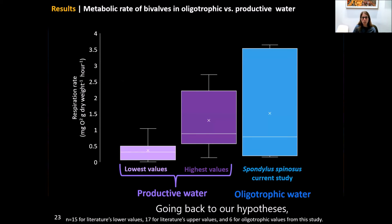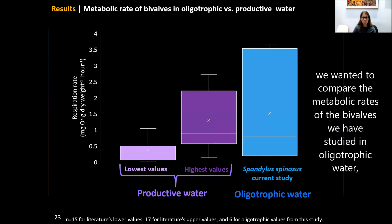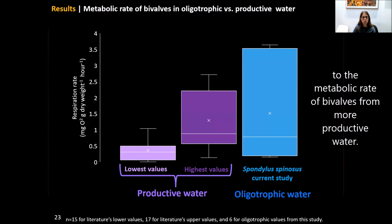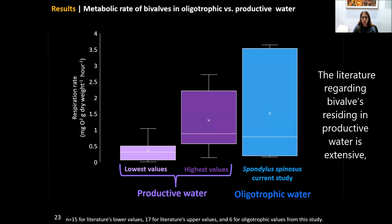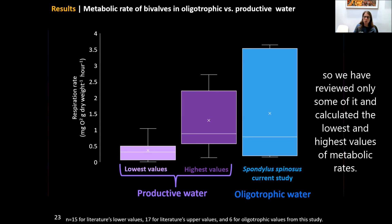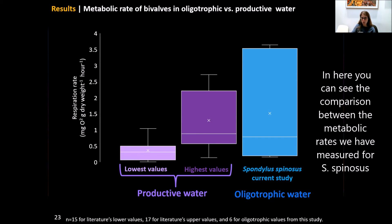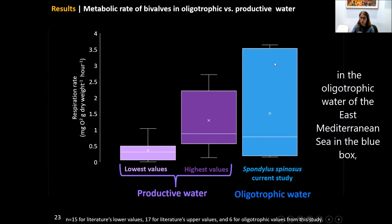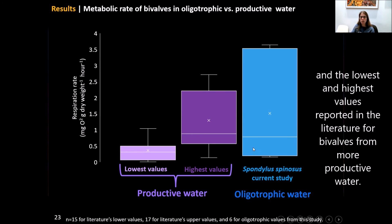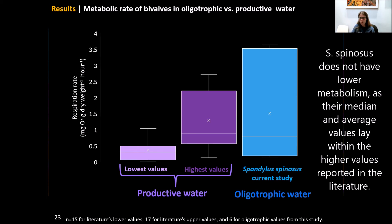Going back to our second hypothesis, we compared the metabolic rates of bivalves studied in oligotrophic water to those from more productive water. The literature on bivalves in productive water is extensive, so we reviewed a portion and calculated the lowest and highest reported metabolic rates. Here you can see the comparison between the metabolic rates of Spondylus spinosus in the oligotrophic East Mediterranean Sea shown in the blue box, versus the range reported in the literature. Spondylus spinosus does not have a low metabolism — its median and average values lie within the highest values reported in the literature.